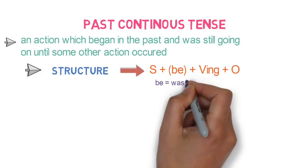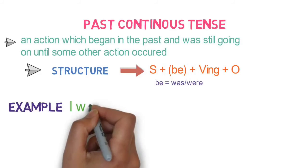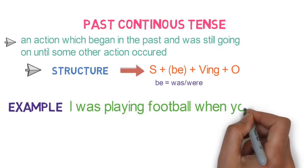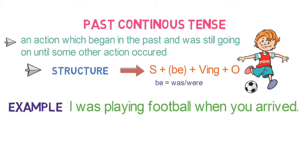Be here includes was and were. For example, I was playing football when you arrived. It means my action of playing was going on until you arrived.